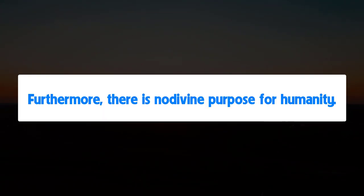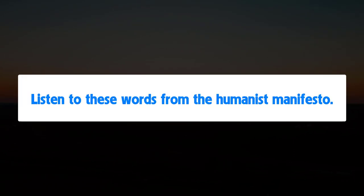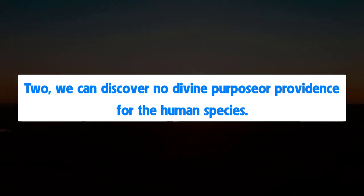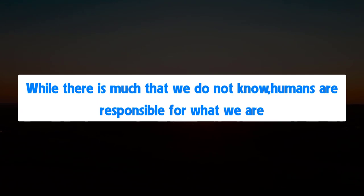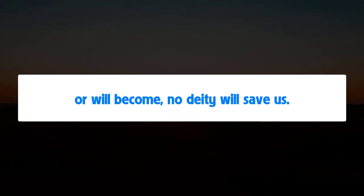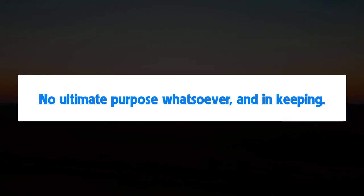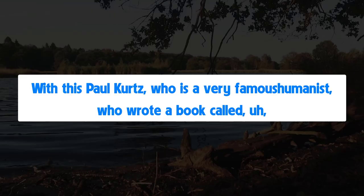So naturalism explains everything. Furthermore, there is no divine purpose for humanity. Listen to these words from Humanist Manifesto 2: 'We can discover no divine purpose or providence for the human species. Humans are responsible for what we are or will become. No deity will save us. We must save ourselves.' We are all alone in this great big universe — no ultimate purpose whatsoever.